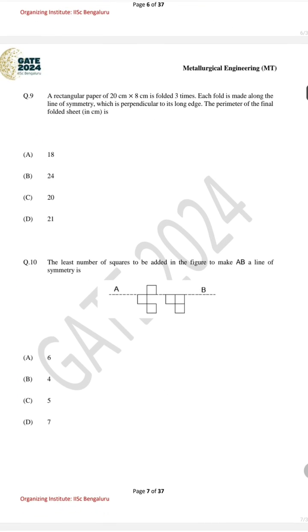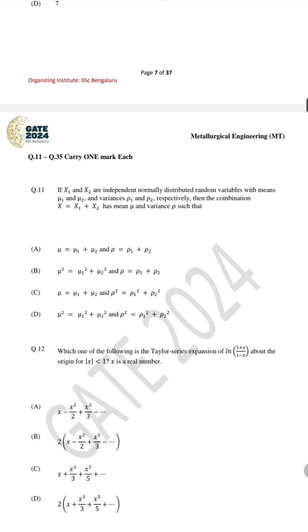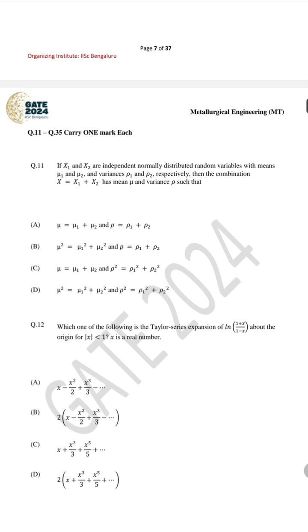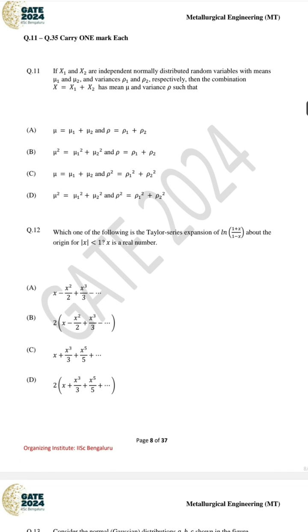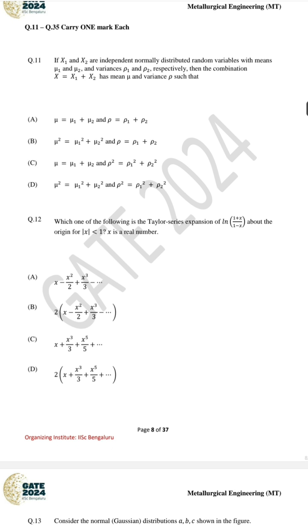For question number nine the correct answer is 18. For question number ten, the last question for General Aptitude, the correct answer is 6. Now let's come to question number 11, which is from the Mathematics section — the correct answer is A.